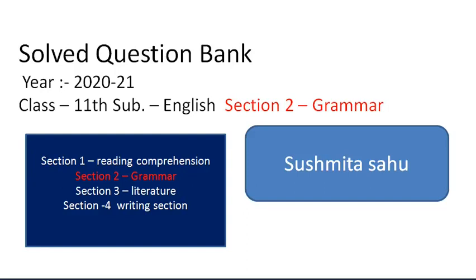Hello students, here I am today with the solved question bank of Class 11, subject English. I have divided my answers into three sections, just as they will appear in your exam. Section 1 will be reading comprehension, Section 2 will be grammar, Section 3 will be literature, and Section 4 will be the writing section. I have given you a YouTube link for each section, which you can pick from my description box. So let's begin with Section 2, the grammar section — a very important section.